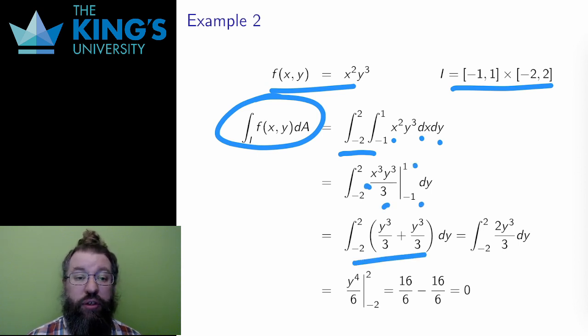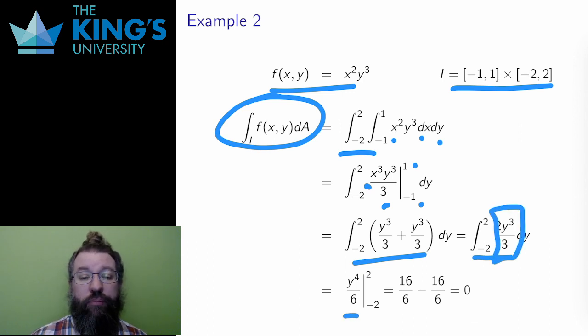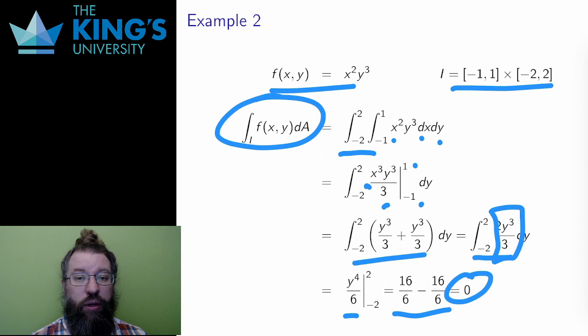After simplifying the evaluation, I get 2y cubed over 3. Then I do the y integration, getting the antiderivative of y to the 4 over 6 and evaluating on the y bounds. The result here is zero. This zero result tells me that the volume defined by this graph is equally above and below the xy-plane.